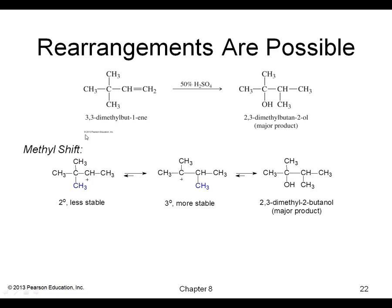Rearrangements are possible with alkene chemistry. In this example, after the pi electrons attack a hydrogen to give a secondary carbocation, you can end up getting a methyl shift to get a more stable tertiary carbocation, to which the alcohol then adds on.